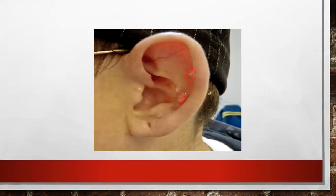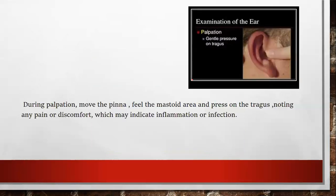These are the nodules on the helix — these are the small nodules called tophi. During palpation, move the pinna and press on the tragus, noting any pain or discomfort which may indicate inflammation or infection. We should assess the tragus by applying gentle pressure on it. If the patient has any pain while palpating the tragus, it indicates inflammation or infection. Normally, the patient does not have any pain on palpation.